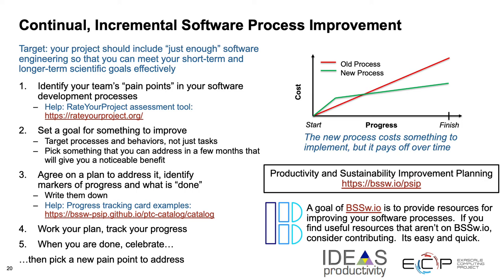There are examples in the catalog that you can look at to get some idea of things that may be applicable to your project. Once you've come up with your progress tracking card, work the plan, track your progress in it, and check off the milestones as you complete them. And when you are done, have a celebration. Then you can pick another new pain point to address. Also, we have resources at the Better Scientific Software site for improving your software processes. And if you find other useful resources that aren't on the site, consider contributing them — it's really quite quick and easy.